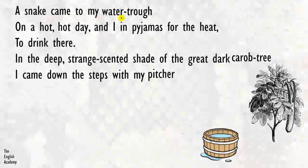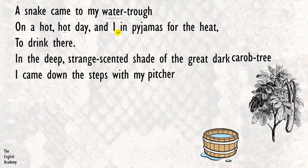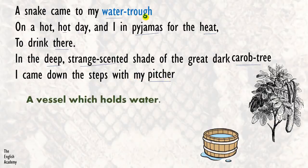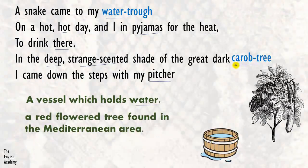Let us begin with this chapter. 'A snake came to my water trough on a hot, hot day, and I in pajamas for the heat, to drink there. In the deep, strange-scented shade of the great dark carob tree, I came down the steps with my pitcher.' First of all, we will see the meanings. Water trough is a vessel which holds water — a big tub used to store water. The next word is carob tree.